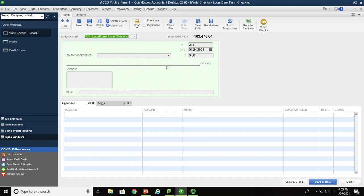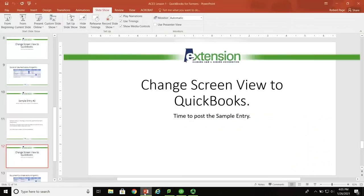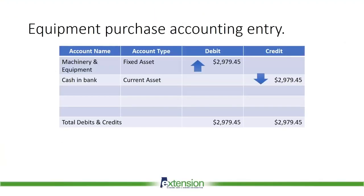The equipment purchase accounting entry is straightforward. Machinery and equipment, a fixed asset, is debited for $2,979.45, and cash and bank is credited for $2,979.45, with total debits and credits matching at $2,979.45.